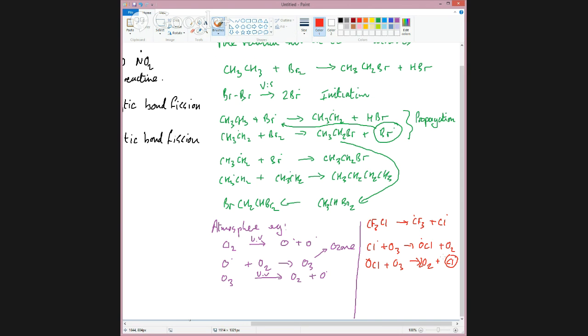And that chlorine radical there is reformed and can then go on to zap another ozone molecule. And if you notice, if we add these two equations together, what we get is 2O3 goes to 3O2, and it's been catalyzed by the chlorine radical. So a chlorine radical catalyzes the decomposition of ozone in the stratosphere.